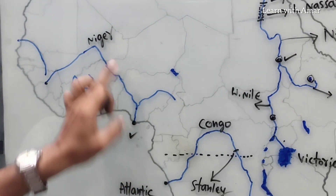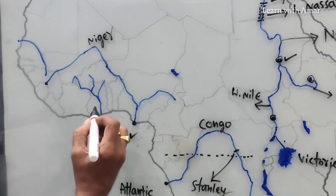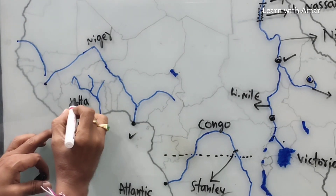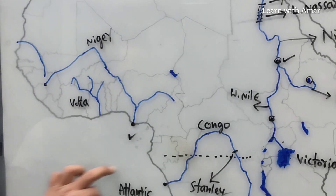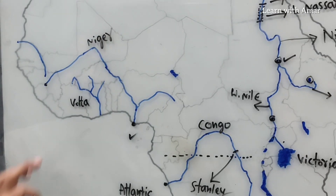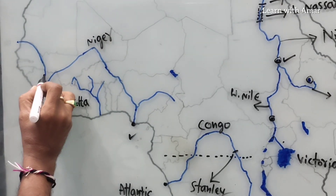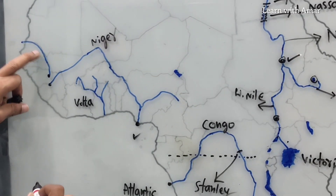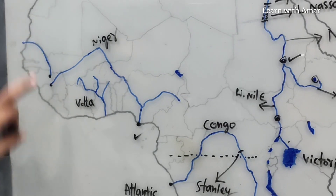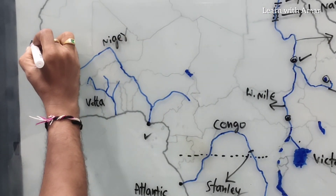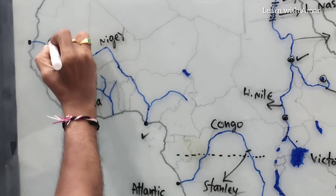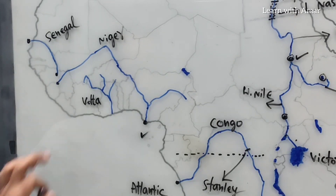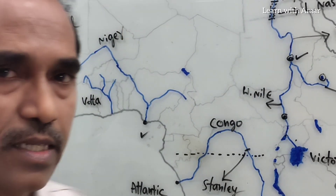There is also a tributary of Niger River. This one is Volta River. Volta River also joins the Gulf of Guinea. One more river here also originates in the Guinea Highlands. It acts as a border between Mauritania and Senegal and joins the Atlantic Ocean. The name of this river is Senegal River — named after the country. So these are all about rivers in Africa.